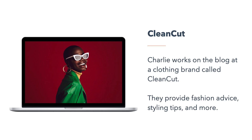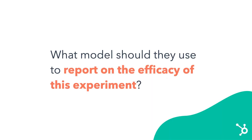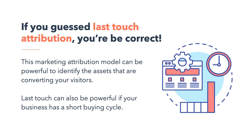Charlie works on the blog at a clothing brand called Clean Cut. They provide fashion advice, styling tips, and more. They're looking to increase the number of conversions their blog posts generate, so they add a pop-up form to the listing page and their highest-traffic blogs. If you guessed last-touch attribution, you're correct. This model can be really powerful to identify the assets that are actually converting your visitors. Last-touch can also be powerful if your business has a short buying cycle — if leads and customers don't usually have many touch points before buying, it can unlock great insights about buying behavior.